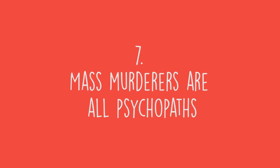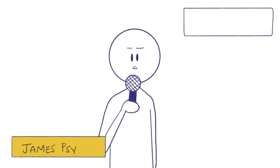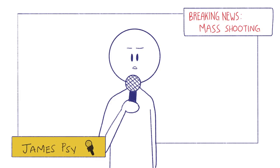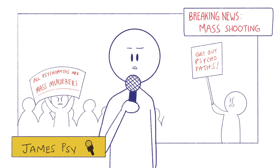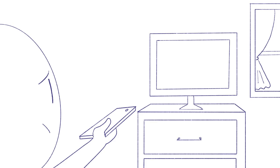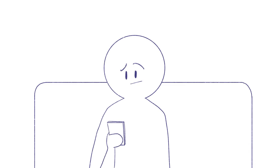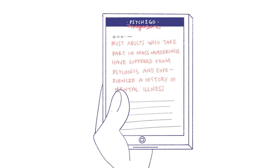Number seven: Mass murderers are all psychopaths. It's easier to label a criminal than to actually understand them. And this is exactly why mass shooters, such as the Columbine shooter, are immediately given the title psychopath. Forensic psychologist Dr. J. Reed Milloy discovered that most adults who take part in mass murders have suffered from psychosis and experienced a history of psychiatric illness.